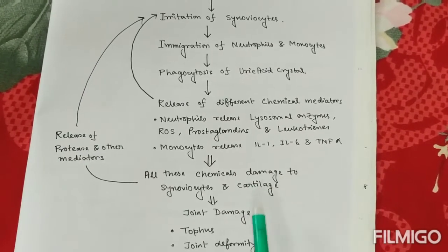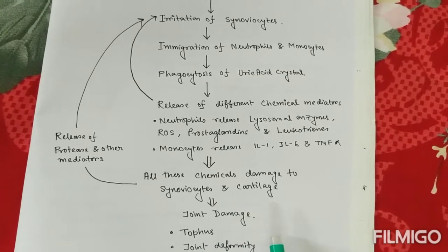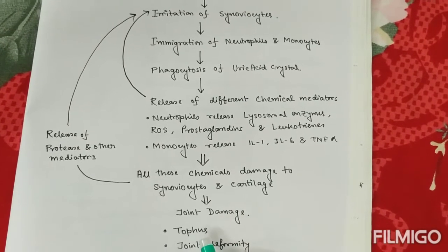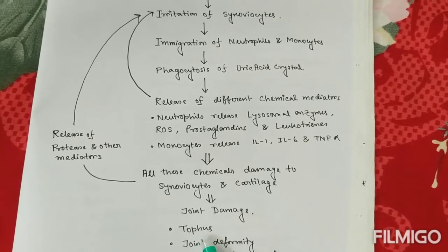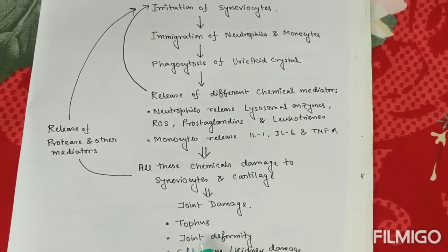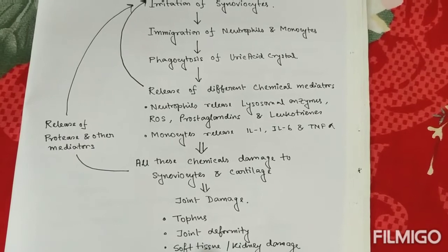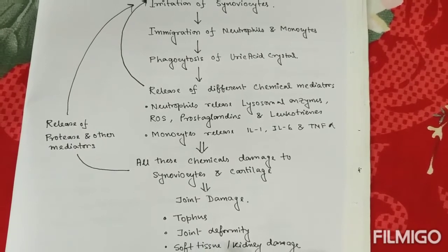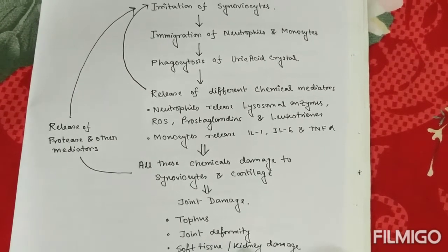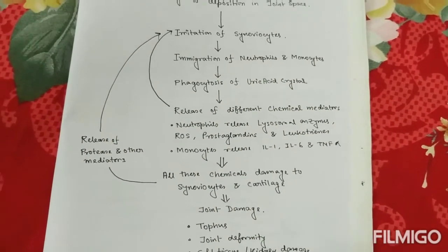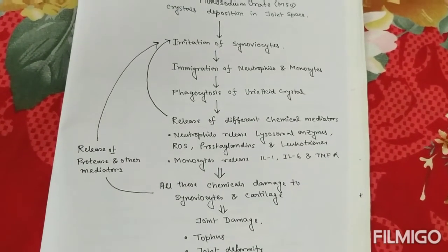This joint damage or gout is characterized by the presence of tophus, the pathognomonic feature of gout. There is also some joint deformity, soft tissue damage, and kidney damage. So this is all about the pathogenesis of gout. Thank you.